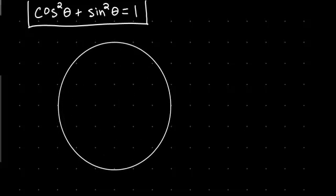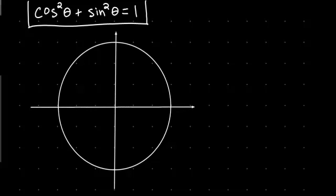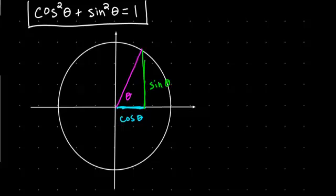Let's draw a quick circle here. Let's take an arbitrary angle theta. We know that the horizontal portion of it is cosine theta — that's the x value — and the vertical portion is sine theta. This point here is (cosine theta, sine theta); that's how we defined cosine and sine in the beginning. Cosine is the x coordinate when we're on the unit circle, and sine is the y coordinate.